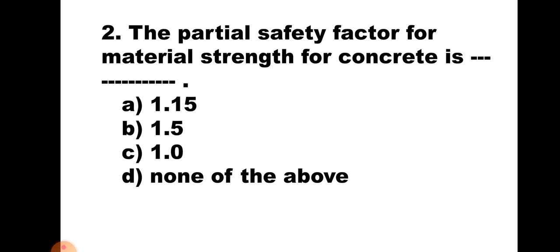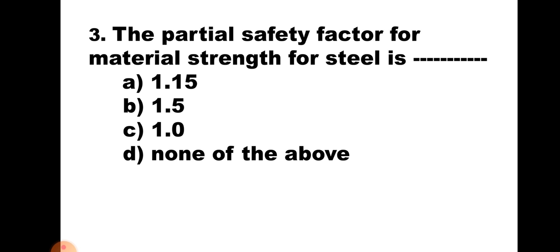Question number 2: The partial safety factor for material strength for concrete is: A. 1.15, B. 1.5, C. 1, D. None of the above. The partial factor of safety for concrete is 1.5. Hence, the correct answer is B. 1.5.